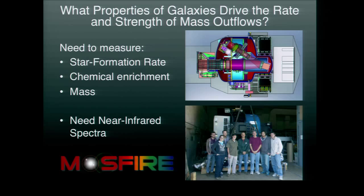To understand on a more fundamental level what is causing this gas to be pushed out, we need more fundamental physical properties of the galaxies. For that, we really want spectra of the optical light emitted by these galaxies, which due to the expansion of the universe is actually shifted into the near-infrared. I was privileged to be part of the MOSFIRE team, which built a new multi-object near-infrared spectrograph for Keck — this is a picture of it, taken right across the street about a year ago, right before we shipped it to Hawaii.